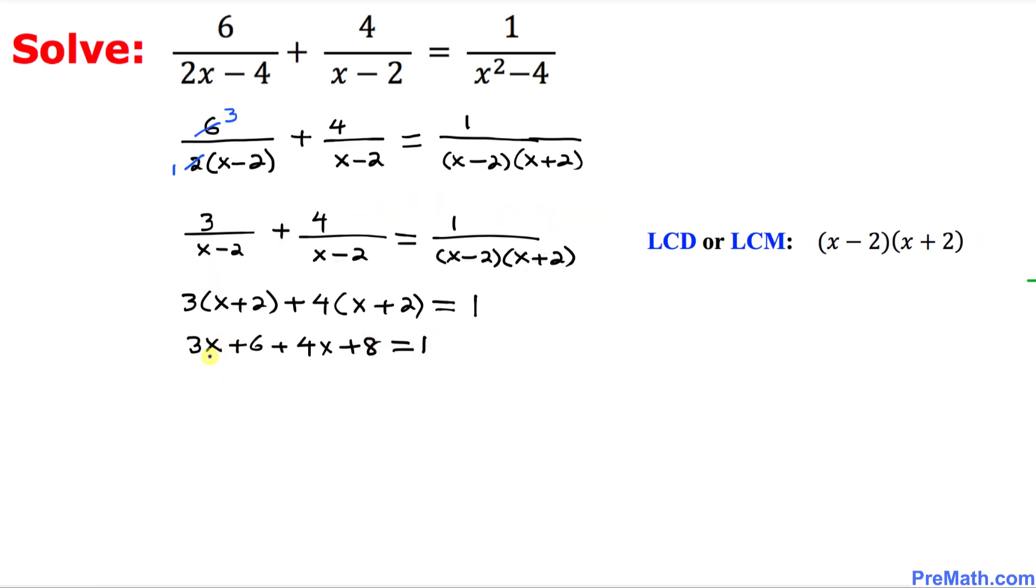Now we are going to combine the like terms. 3x plus 4x is going to give us 7x, and plus 14 equals 1. Since we want to solve for x, let's move this 14 on the other side. 7x turns out to be 1 minus 14. 7x equals negative 13.